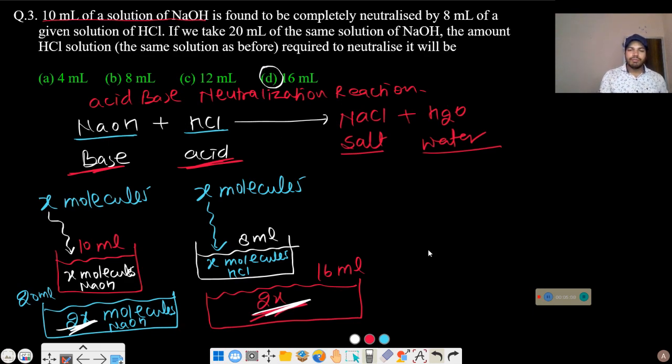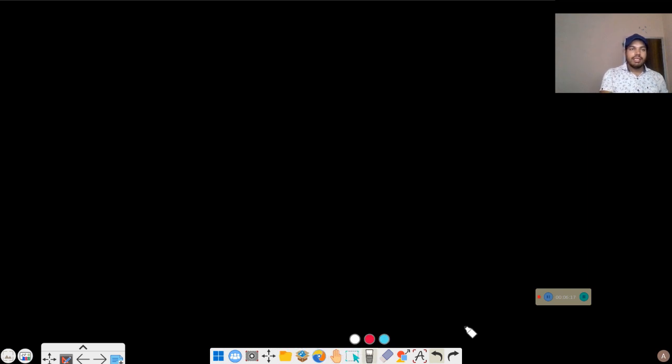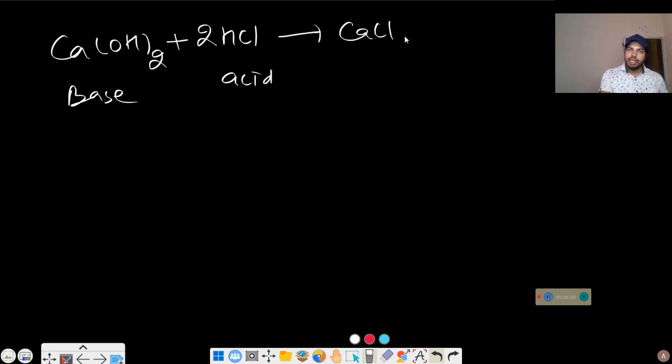Let's change the question. What if the ratio is different? In this question NaOH and HCl had a 1 to 1 ratio. Now consider Ca(OH)2, this acid is HCl. Now 2 molecules of HCl react with 1 molecule of Ca(OH)2 to form this salt CaCl2 plus 2 H2O water molecules.